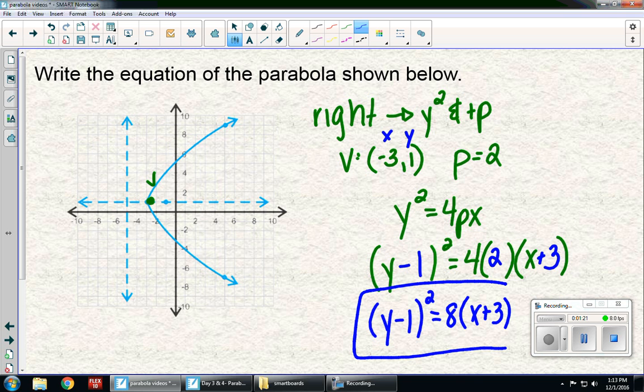Same thing we did in the other examples, except this time you have to account for the shifted vertex. And remember, it's always the opposite. So, because it was a positive 1 for a y value of the vertex, it becomes y minus 1 squared.